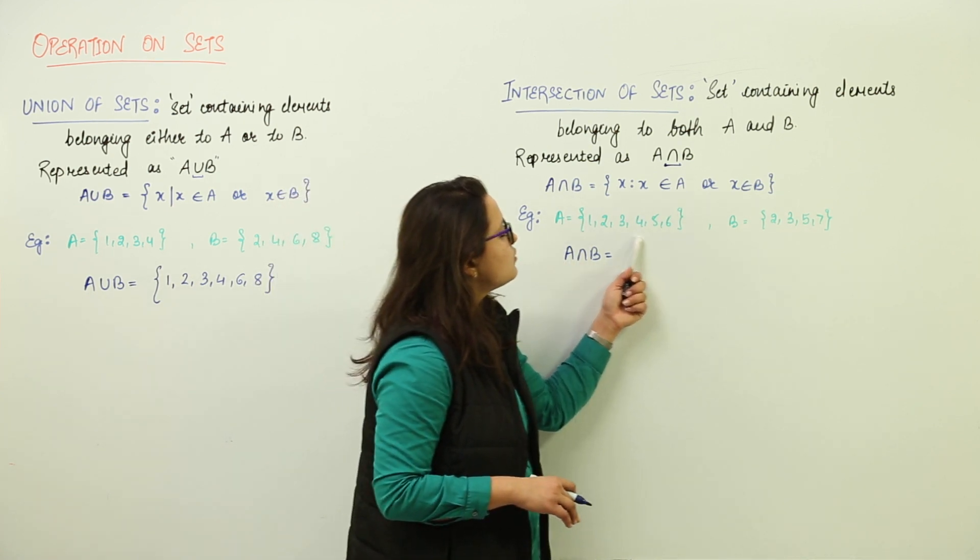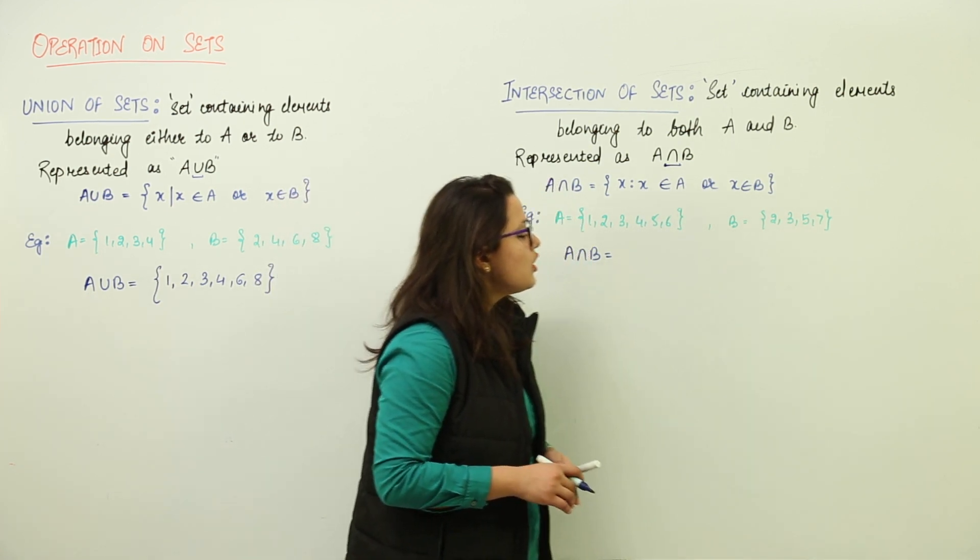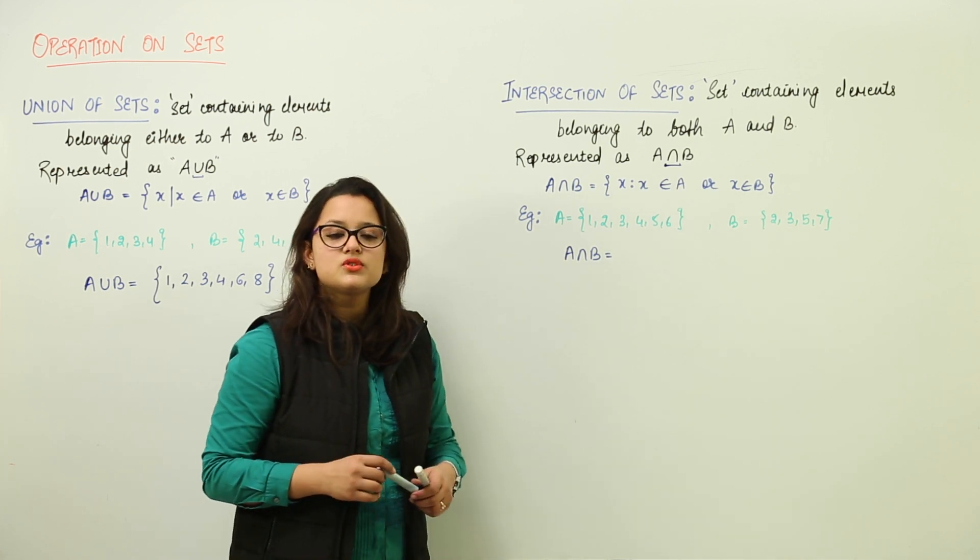For the next example, we have A containing 1, 2, 3, 4, 5, 6 and B containing 2, 3, 5, 7. Here intersection is to be found.